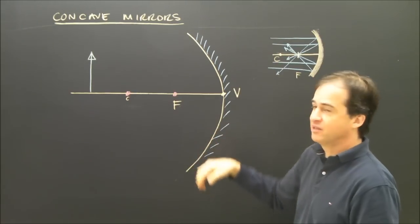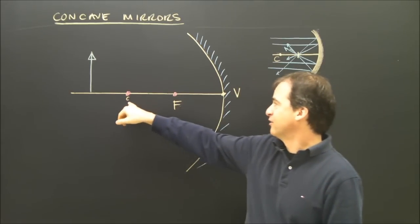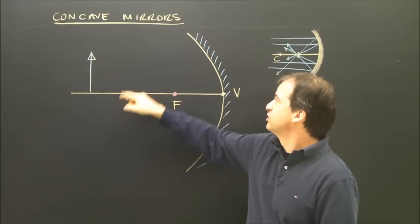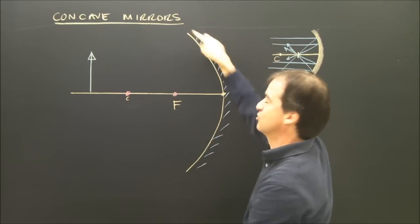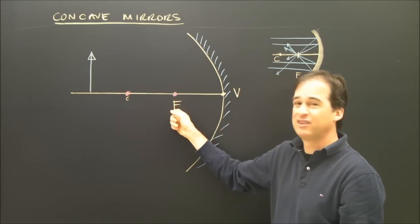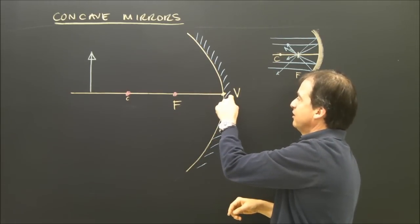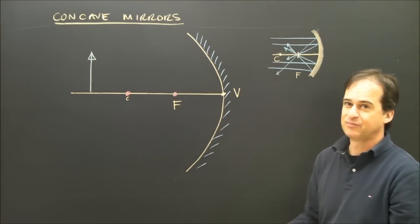A concave mirror has some important points. The focal point here, which is really important. The center of curvature, which is the center of the circle that this is going around. It's not very useful. I drew it in a small letter because it's really this point we need. And then there's a vertex here, where our axis intercepts the mirror.